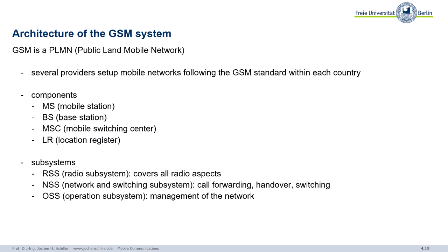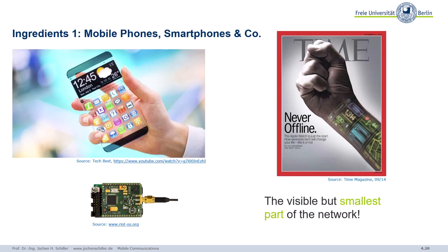We also have a so-called operation subsystem, a system responsible for the management of the network. Before explaining all those components and systems in more detail, let's start with the key ingredients for a cell phone system. Ingredient number one: mobile phones, smartphones — all those nice gadgets where you have your apps, download things, type messages, etc.